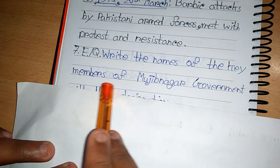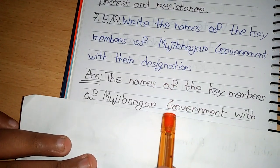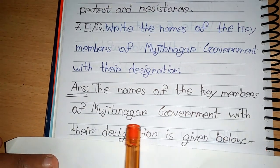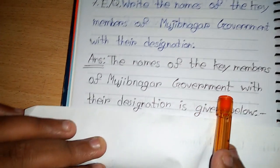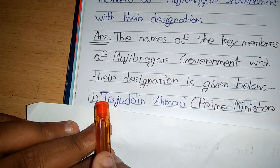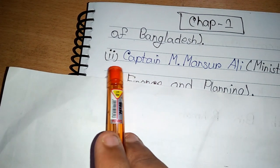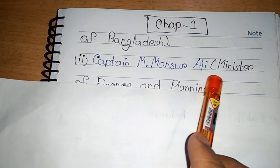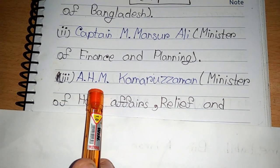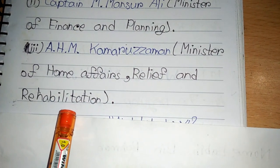Fifth question: Write the names of the key members of Mujibnagar government with their designation. Number 1, Tajuddin Ahmed, Prime Minister of Bangladesh. Number 2, Captain M. Mansur Ali, Minister of Finance and Planning. Number 3, A.H.M. Kamruzzaman, Minister of Home Affairs, Relief and Rehabilitation.